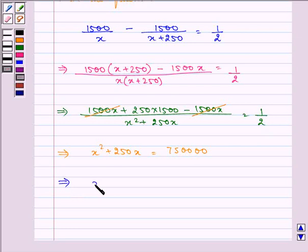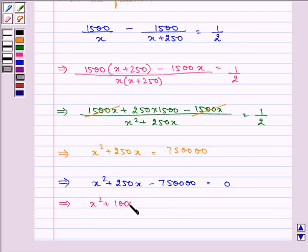That further implies x square plus 250x minus 750000 is equal to 0. Now splitting the middle term we have plus 1000x minus 750x minus 750000 is equal to 0.